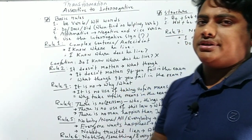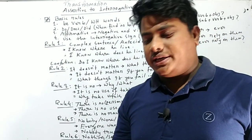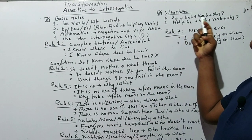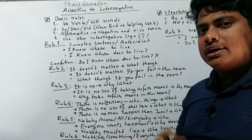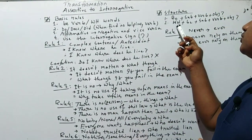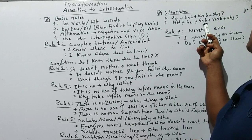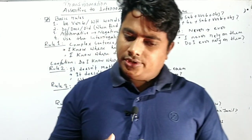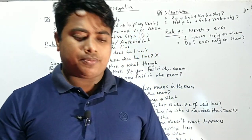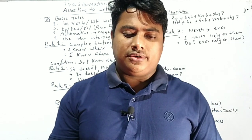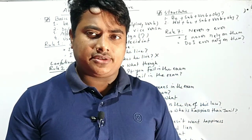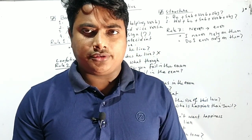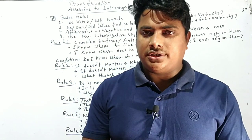To summarize the structure of interrogative sentences when converting from assertive: follow these two patterns — B-verb plus subject plus verb plus object, or WH word plus B-verb plus subject plus verb plus object. I hope this content helps you remove confusion about interrogative sentences. If you are new to my channel, please subscribe. Thank you so much for watching this video.